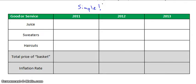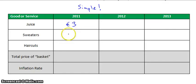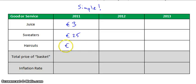So the basic idea is this: you have a basket of goods, and in this case we have just three goods, as you can see — juice, sweaters, and haircuts. Starting in a base year — and the base year simply means it's going to be our starting point — juice is going to cost 3 euro, a sweater is going to be 25 euro, and a haircut is going to be 15 euro.